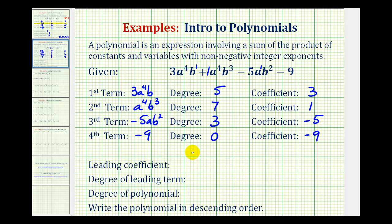Every polynomial has a leading term, and that's the term with the highest degree. In this polynomial the leading term would be the second term. Therefore the leading coefficient would be positive one, and the degree of the leading term would be seven. The degree of the polynomial is the same as the degree of the leading term, so this is a degree seven polynomial.